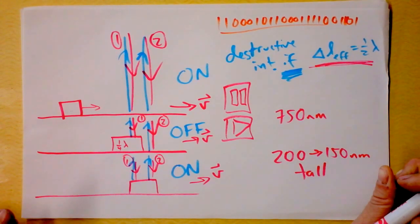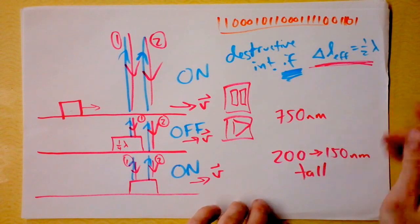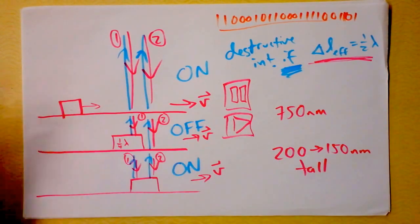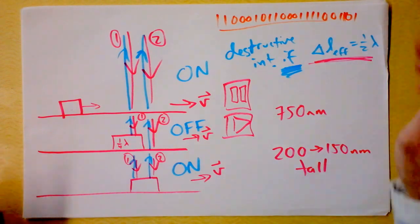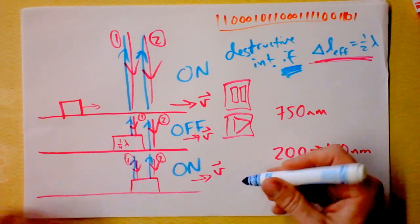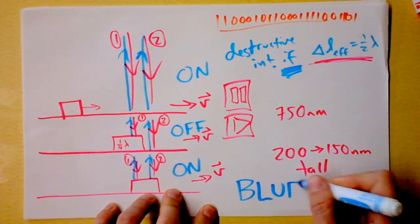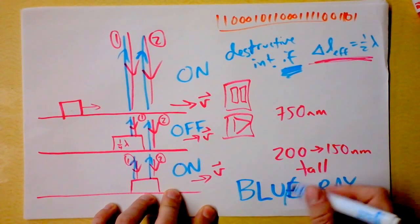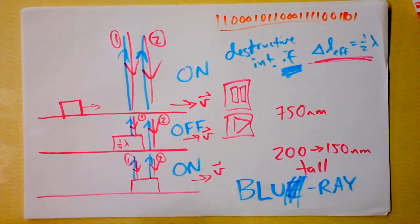But wait, what if we had a smaller wavelength? We could slam more dots in there. That's why they invented Blu-ray, because it's a smaller wavelength. Awesome. What do they call it, Blu-ray? I think they dropped the E because that's cool. Bye bye.